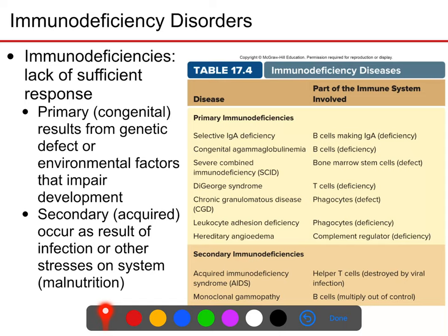Note that all of those are deficiencies for just part of the immune system, which is pretty common. There is one that is a congenital deficiency of the entire immune system: severe combined immunodeficiency, or SCID. This is a deficiency in the bone marrow stem cells — you just don't make any white blood cells, no B cells, no T cells, no neutrophils. These people have basically no immune system.